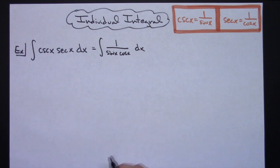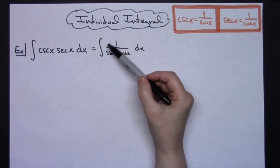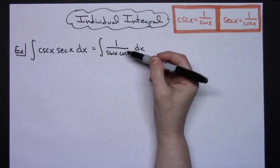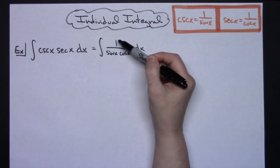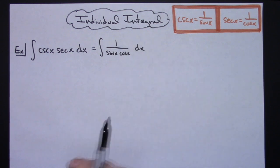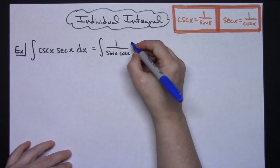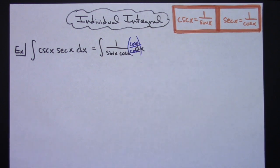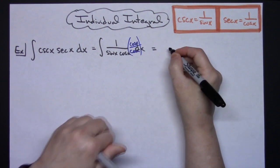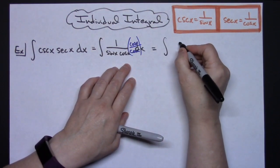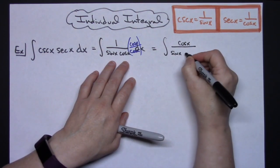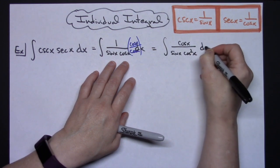At this point I'm going to choose to multiply this by a form of 1 to get it in a different form I can work with more easily. As long as I multiply by a form of 1, I'm not changing the equation at all. So I'm going to choose to multiply by cosine x over cosine x. That gives me the integral of cosine x on top and sine x times cosine squared x on the bottom.